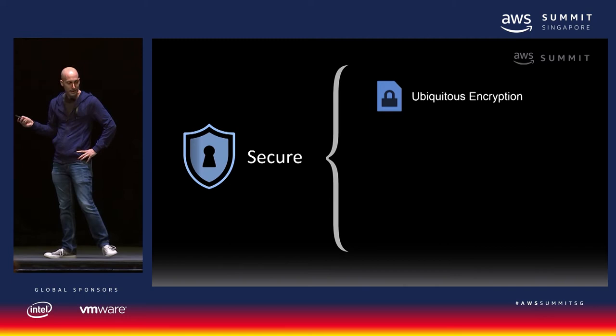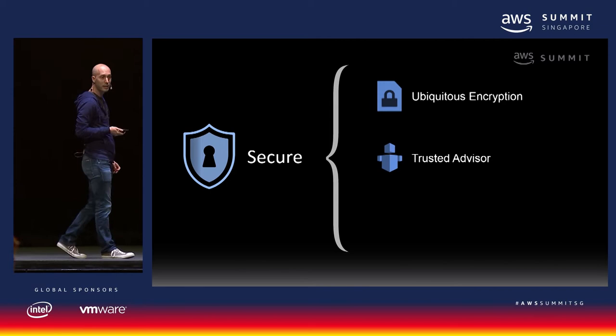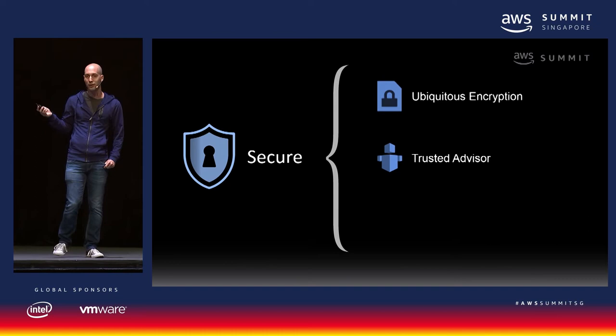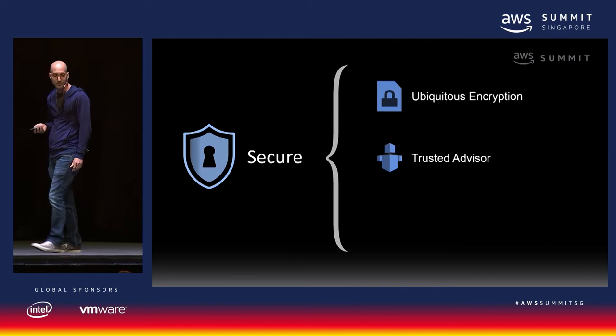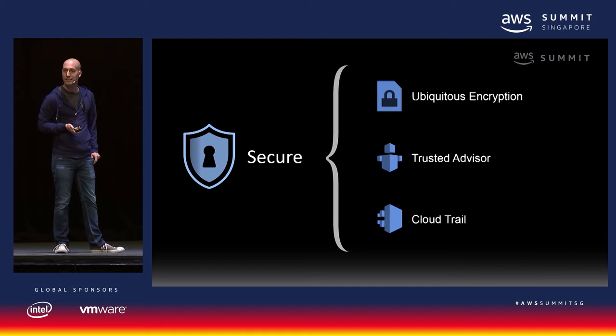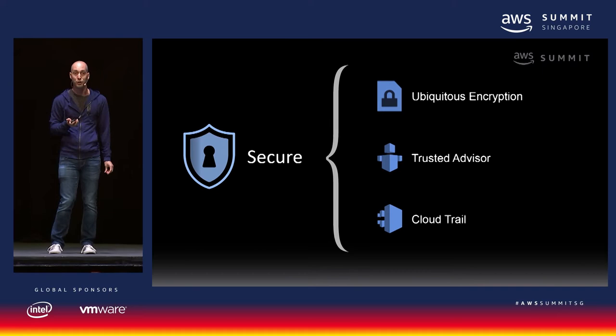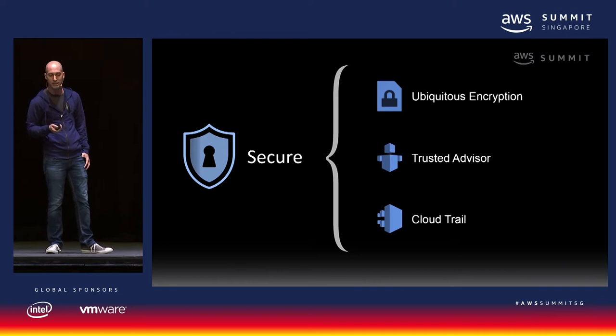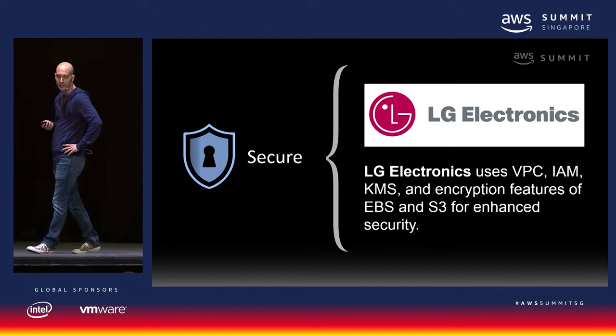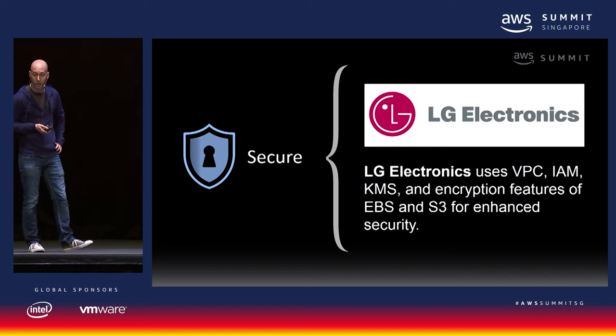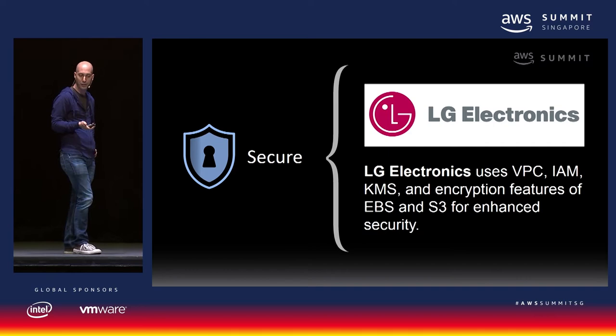We have Trusted Advisor, a service that scans your AWS environment and looks for suggestions on how to improve your security and save costs. And CloudTrail tells you what changed in your AWS environment, when, and who did it — any API calls on your environment get logged in CloudTrail, which can ship those logs to an S3 bucket. LG Electronics uses AWS to enhance service quality for 40 million LG smart TVs around the world, and managed to save 40% in the process — saving money while doing it securely.